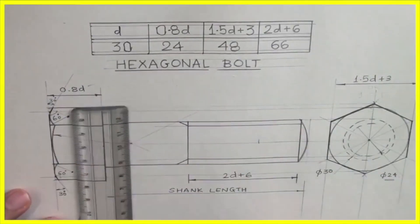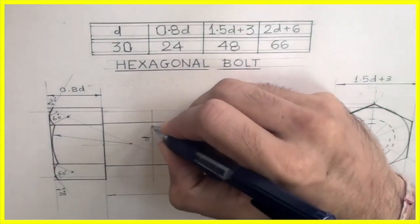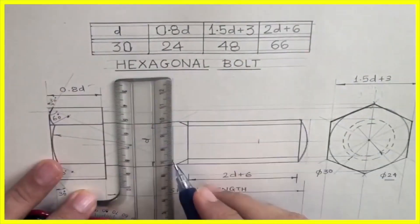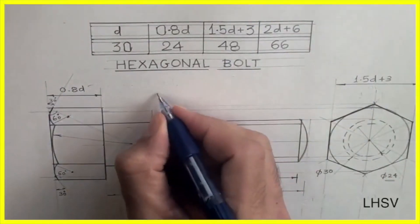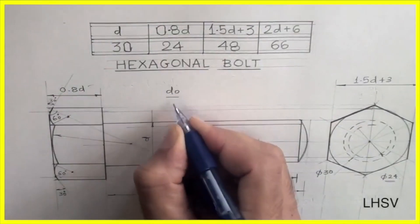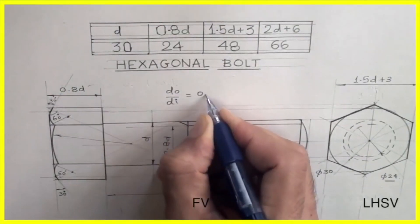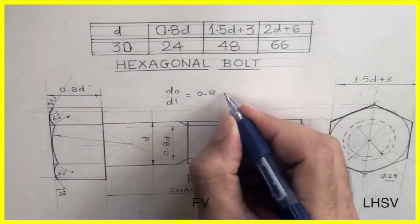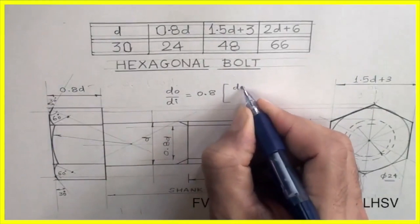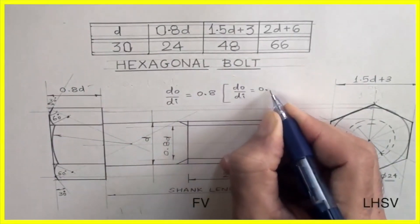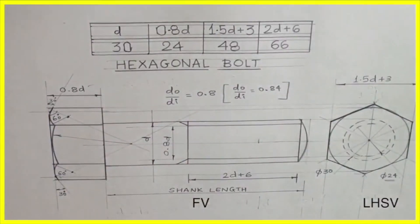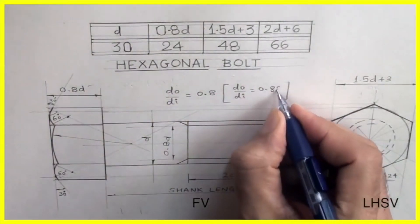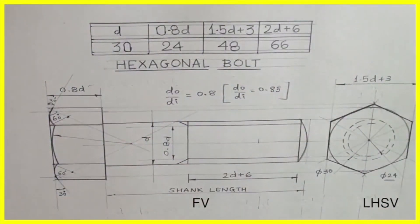This is diameter D, and this is 0.8D. The actual relation is DO upon DI, outer diameter upon inner diameter, that is 0.8. But generally people do take DO upon DI as 0.84 or 0.85. You can take whatever is given by your teacher or textbook. I'll be taking 0.8 in this case.